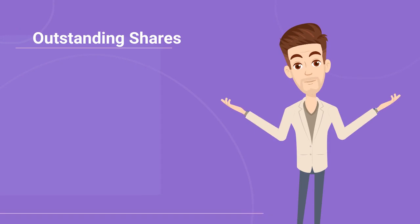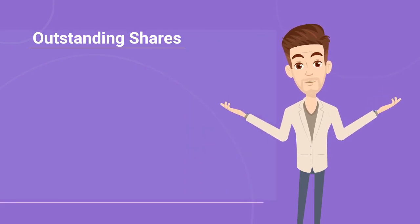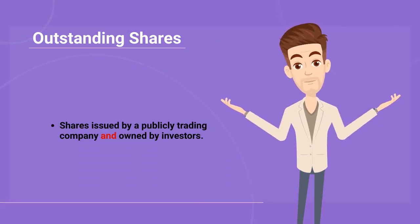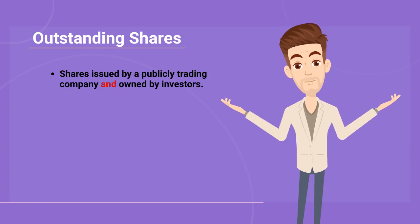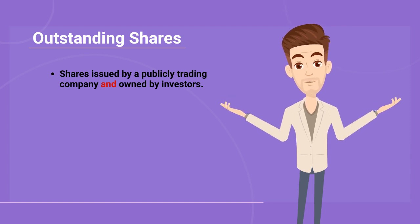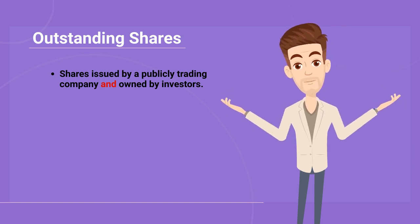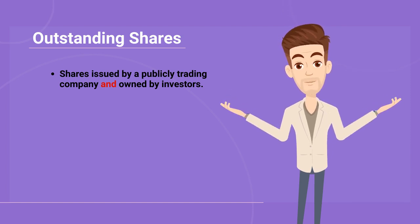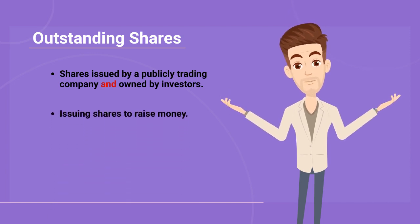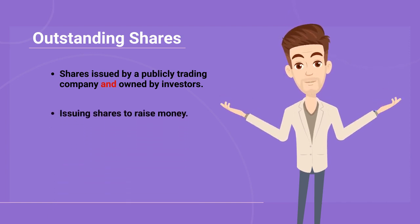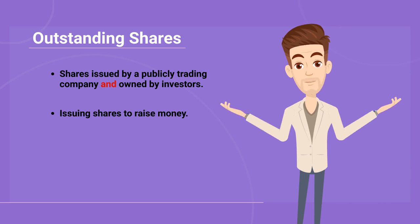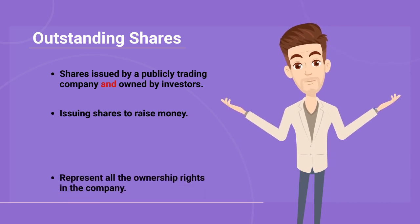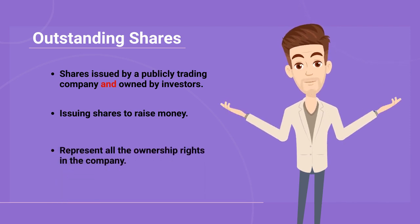First, let us talk about outstanding shares. They are all the shares that a publicly traded company has issued and are currently owned by investors. A publicly traded company can raise money from investors by issuing and selling their shares. The shares represent ownership rights in the company.